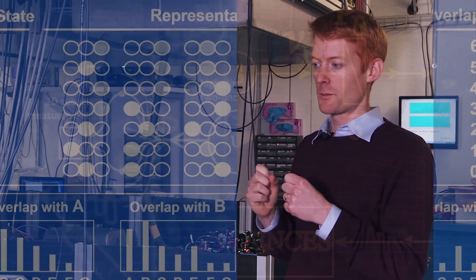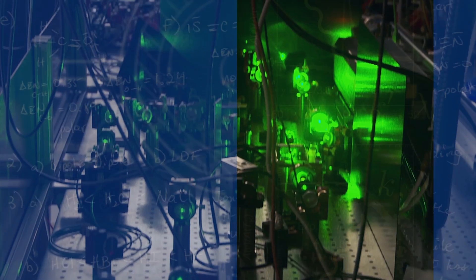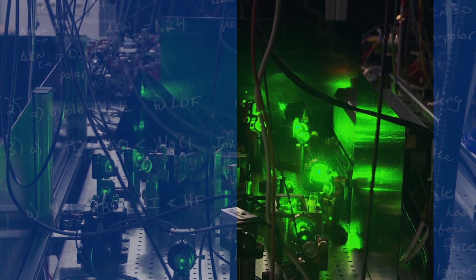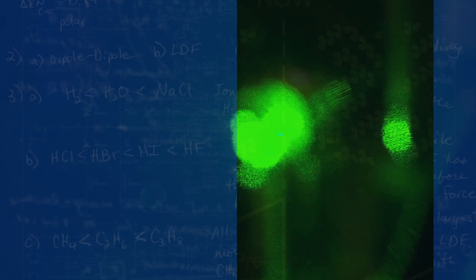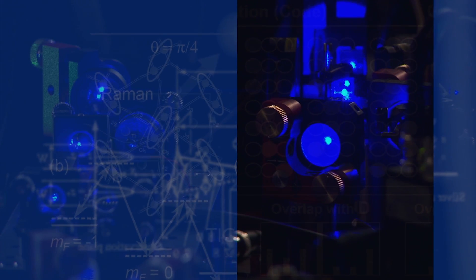And what we would do is we would put some information into the atoms, so we would take some of the laser systems shown here and pulse them on for a short amount of time to store information. And then we would try and do something which is a sort of controlled operation based on what one atom has information. How does that influence the other atom?